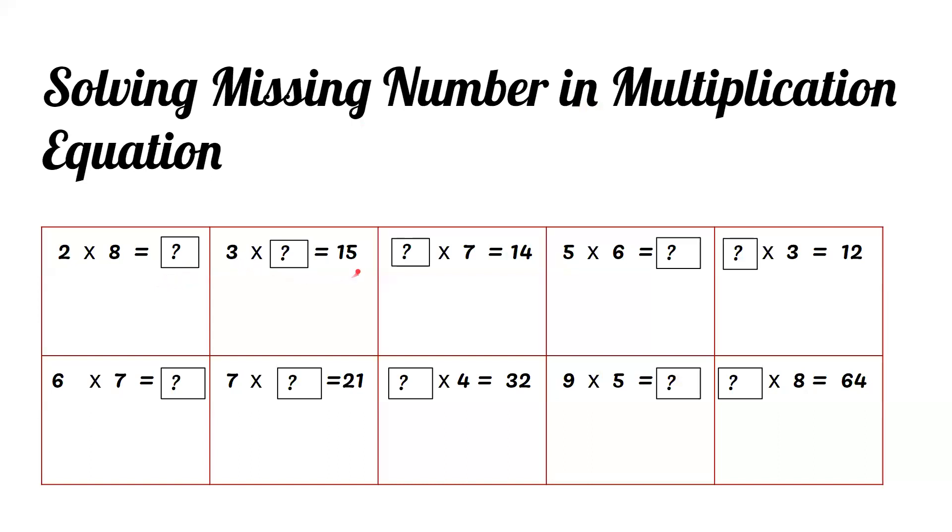3 times what equals 15? 3 ones are 3, 3 twos are 6, 3 threes are 9, 3 fours are 12, 3 fives are 15, so the answer must be 5.